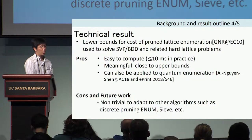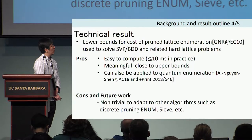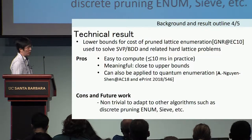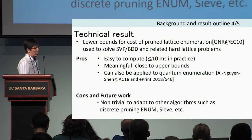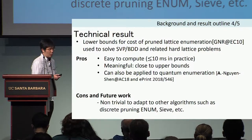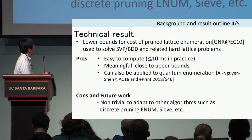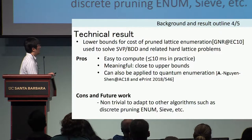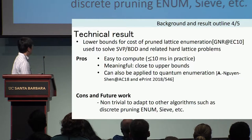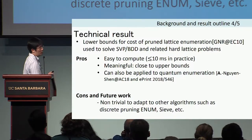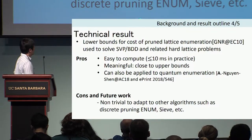We have proved a lower bound for the cost of pruned lattice enumeration, which is used to solve SVP or BDD. The advantage of our result is that it is easy to compute, and our lower bound is reasonably close to the upper bound — experimentally less than 20% in exponent. Our result applies to classical enumeration and can be adapted to the quantum enumeration algorithm. A major open problem remains: how to adapt our technique to other algorithms.